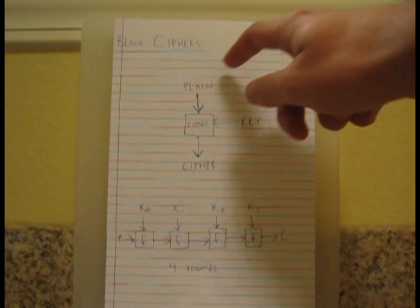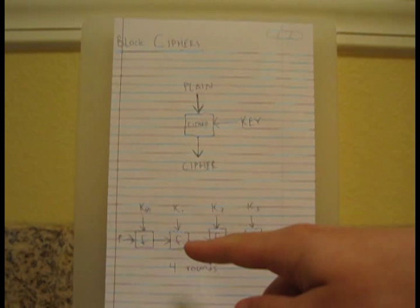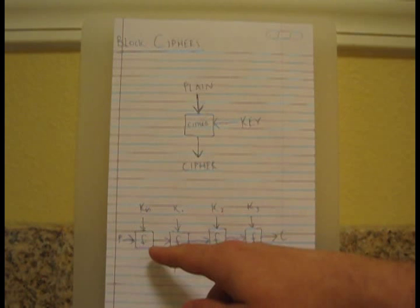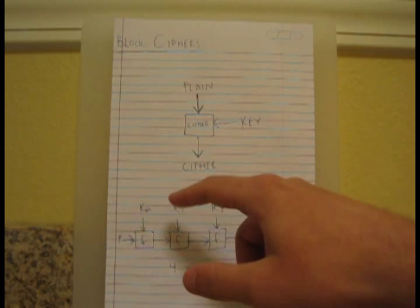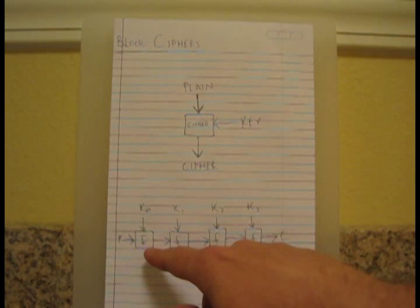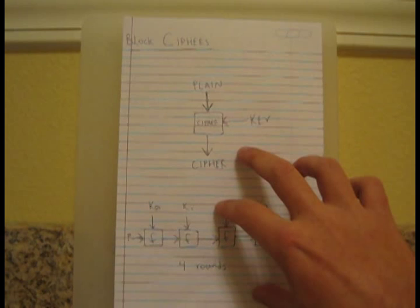Block ciphers are typically broken down into rounds — repeating groups of operations. Plaintext comes in and does some math using subkeys. The real key gets broken down or manipulated to produce these subkeys. First it gets combined with subkey zero, then goes to the next round. The same operations occur in each round function; the only thing that changes between rounds is the subkey being combined. You get through, in this case, four rounds, and you get the ciphertext out.